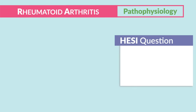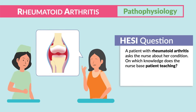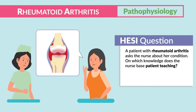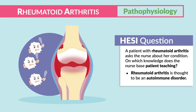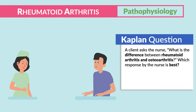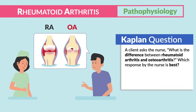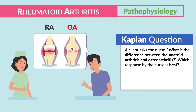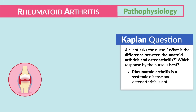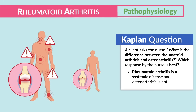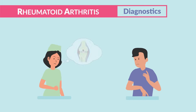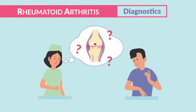NCLEX tip: A patient with rheumatoid arthritis asks the nurse about her condition — the nurse bases teaching on the fact that RA is thought to be an autoimmune disorder. When asked the difference between RA and OA, the best response is: rheumatoid arthritis is a systemic disease, and osteoarthritis is not.